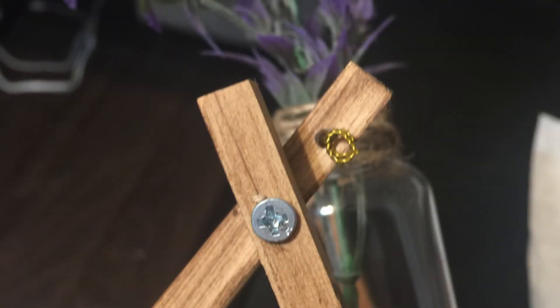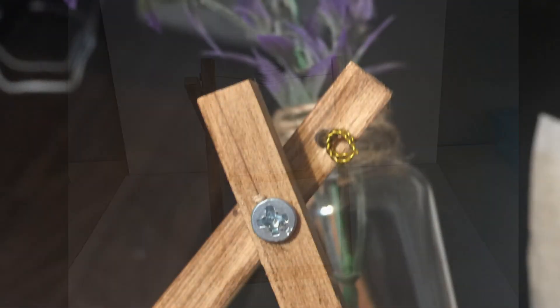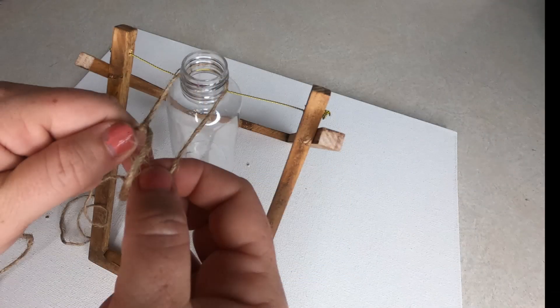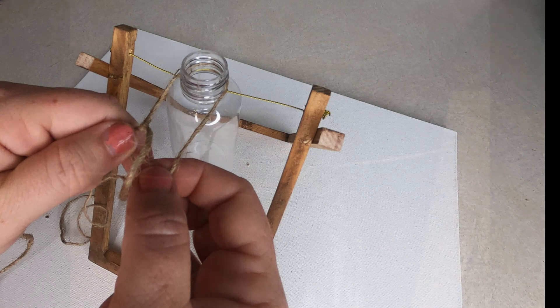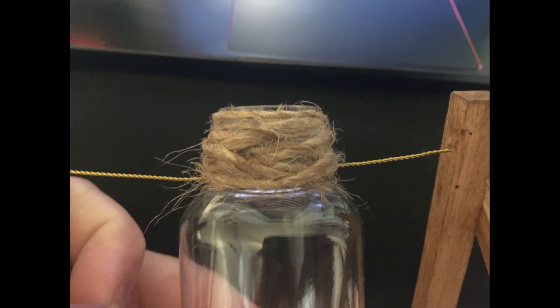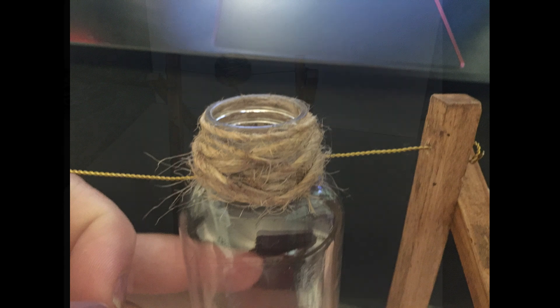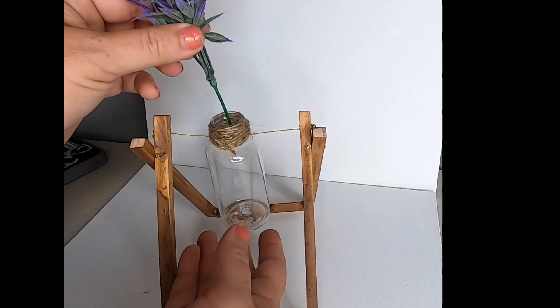So then I wanted to dress up the bottle a little bit, so I took some of the twine that I had on hand and I just wrapped it around the top of the bottle a few times and just tied it in a knot to secure it. And that helped hide that place where the top screwed onto the bottle. Now it looks more like a vase.